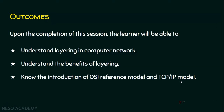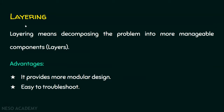We will now see what is layering. Layering means decomposing the problem into more manageable components or layers. Decomposing means breaking the big problem into smaller problems. For example, if we are supposed to solve a big problem, instead of solving it at once, we can break that big problem into smaller problems. If we solve all smaller problems, the big problem is obviously solved. So layering means decomposing the problem into more manageable components or layers, which has two advantages.